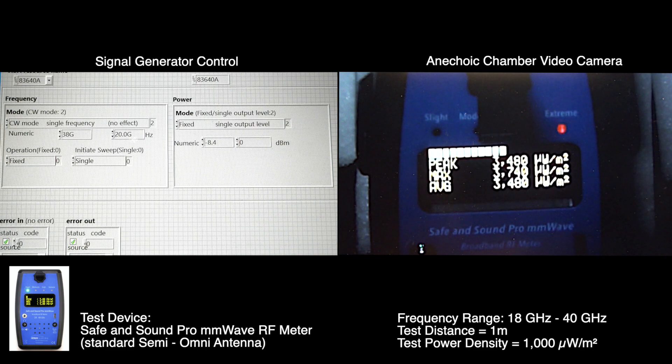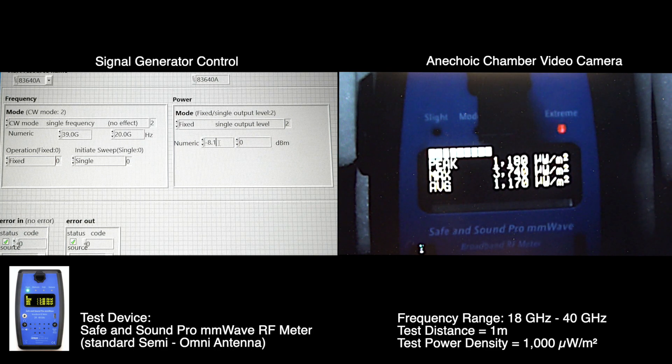38 gigahertz, we need minus 9.9 dBm transmitter power, and we are at 1170 microwatts per square meter. 39 gigahertz, we need a little bit more power, minus 8.1 dBm, and that remains the same. 1170 microwatts per square meter.